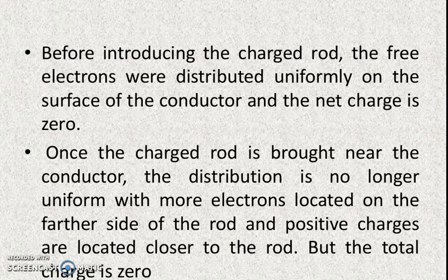So, when we take a charged rod near the neutral body, for a negatively charged rod, positive charges gather toward the rod and negative charges go to the other side. We must remember that the total amount of charge remains zero, because we have not added any charge — it is just redistribution.